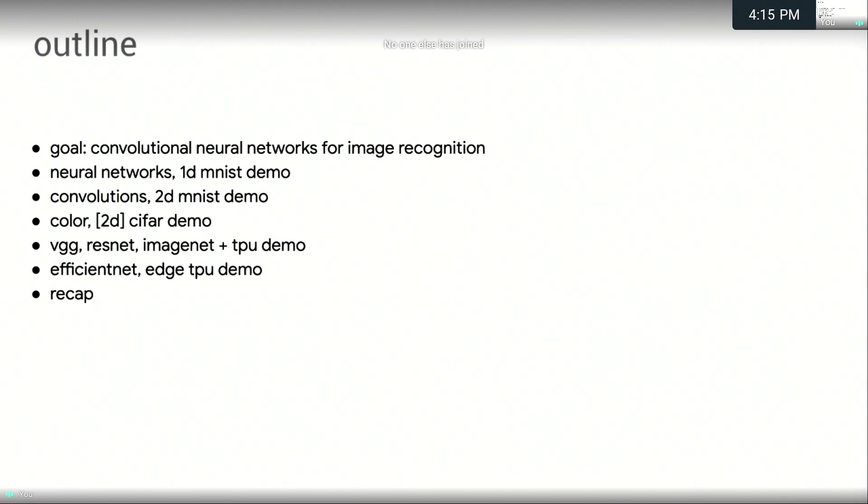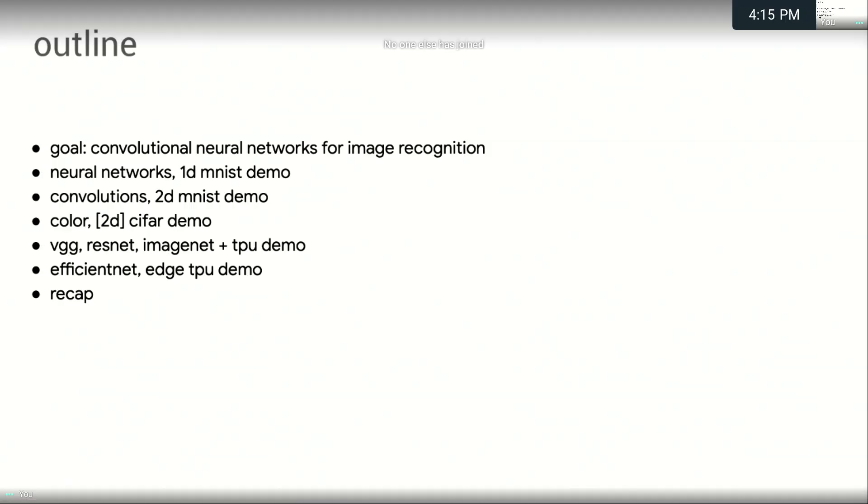Towards this end, we'll do a quick overview of neural networks in general and look at a 1D version of the MNIST demo dataset. From there, we'll introduce convolutions and tackle the MNIST problem again using a 2D approach. From there, we'll look at how we can stack some convolutions together and tackle a slightly larger problem called CIFAR. From there, we'll look at how we can continue to build up these blocks of convolutions to produce VGG, which was a state-of-the-art approach in 2014.